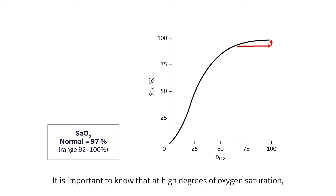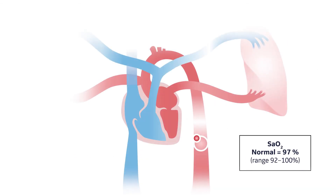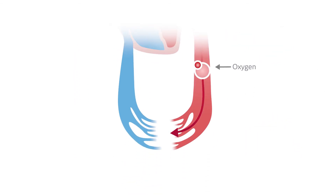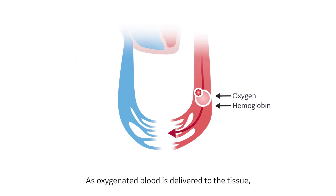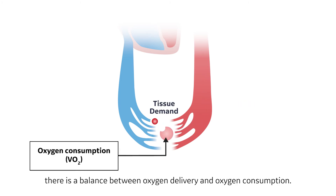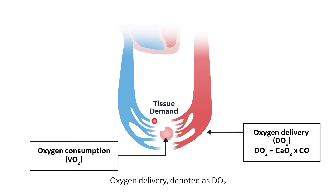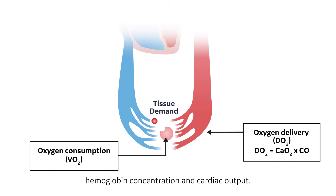It is important to know that at high degrees of oxygen saturation, very large changes in the partial pressure of oxygen will result in minimal changes to the saturation values. As oxygenated blood is delivered to the tissue, there is a balance between oxygen delivery and oxygen consumption. Oxygen delivery, denoted as DO2, can be calculated from knowledge of oxygen saturation, hemoglobin concentration, and cardiac output.